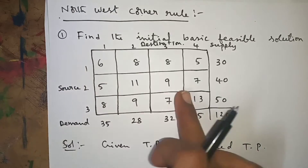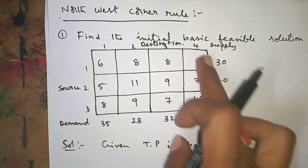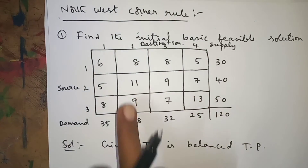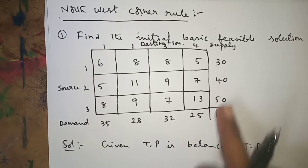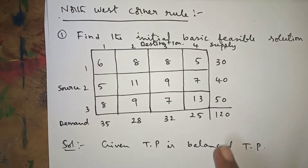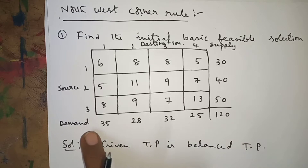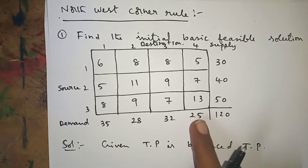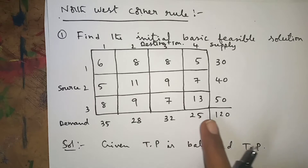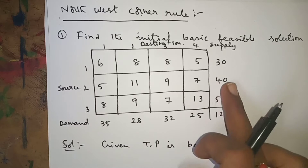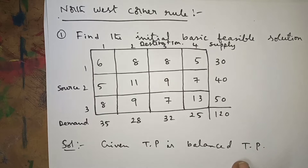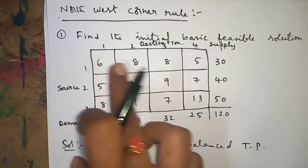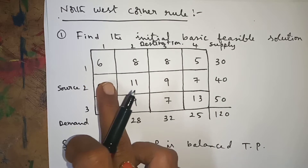There are three sources and four destinations. These elements are the cost matrix elements; this is the demand and supply. If you add all the supply values: 30 plus 40 plus 50 equals 120. If you add all the demand values: 35 plus 25 plus 32 plus 25 equals 120. Sum of supplies equals sum of demand, therefore the given TP is a balanced TP.